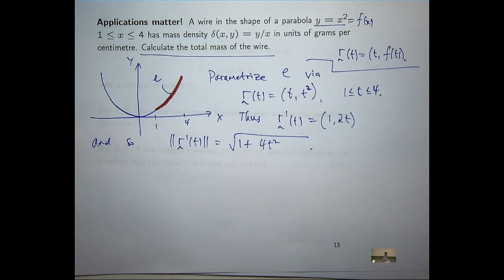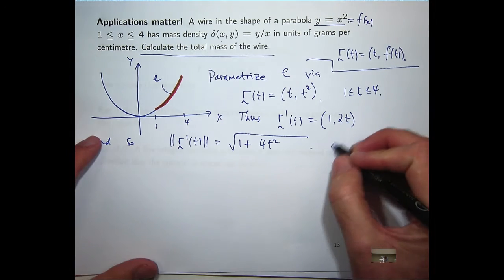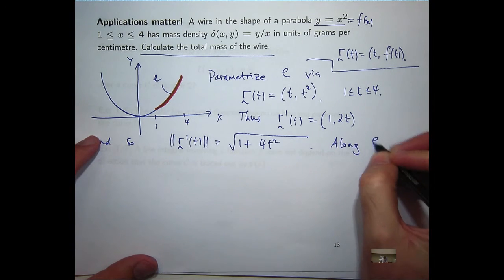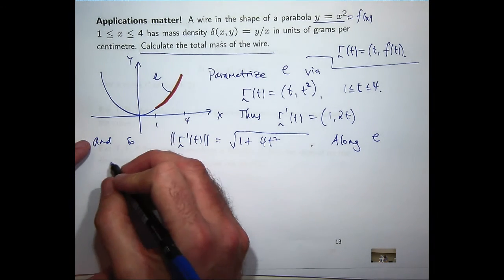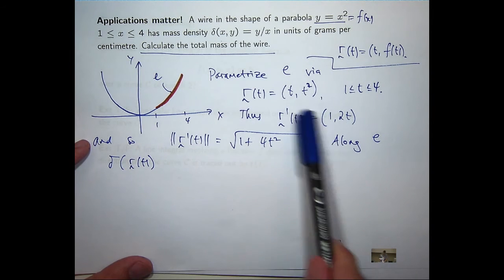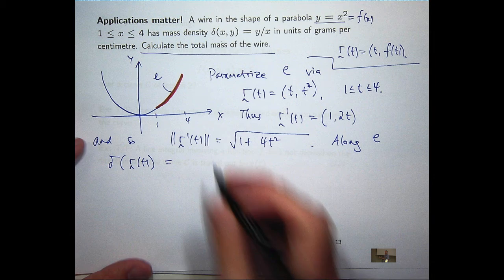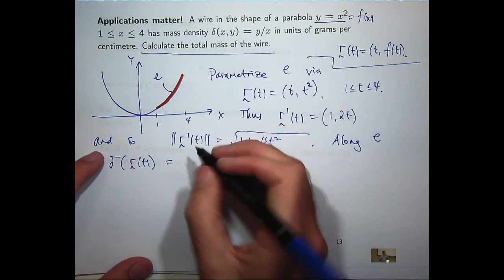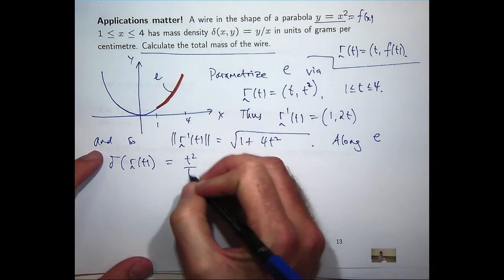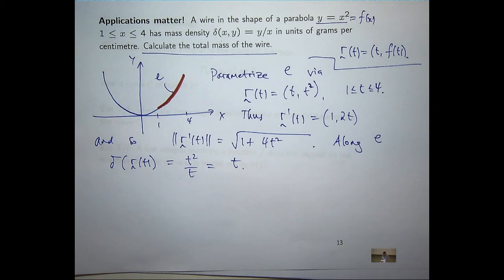OK. So along my curve, the density function is just, well, we replace y with t squared and x with t. So I can cancel off. I'll get t.